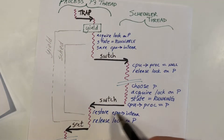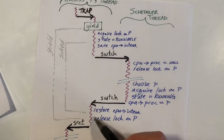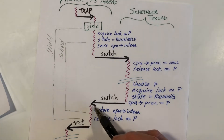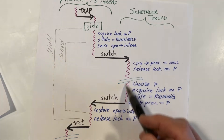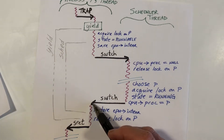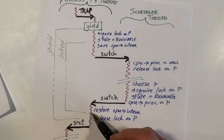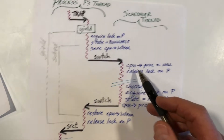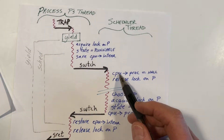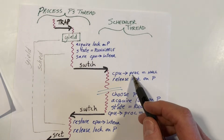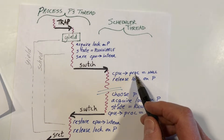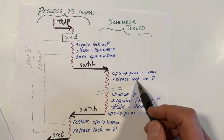After we call switch, some other stuff happens and switch ultimately returns. We then finish execution of the SCED function and yield function, restoring the user state and returning. In the scheduler thread, once we resume, we change the CPU's proc field to null because we're no longer executing that particular process, and we release that lock.